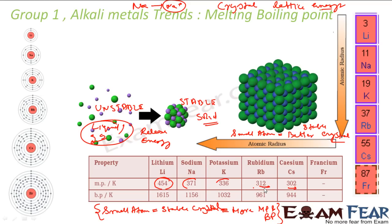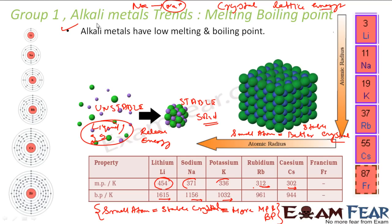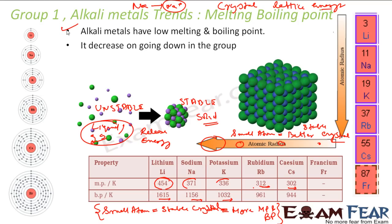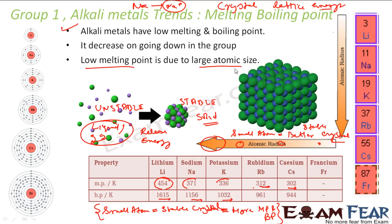Alkali metals generally have low melting and boiling point compared to other metals. If you compare alkali metals with alkaline earth metals, alkali metals have a bigger radius, which leads to lower melting and boiling point. Within the alkali metal group, going down the group, the atomic radius increases, so the melting and boiling point decreases. The low melting and boiling point is due to large atomic size.